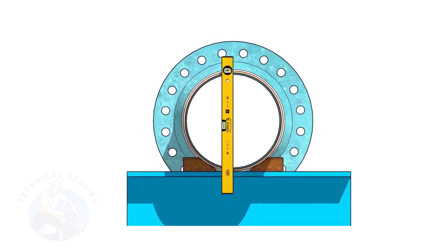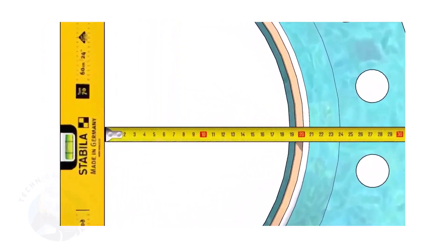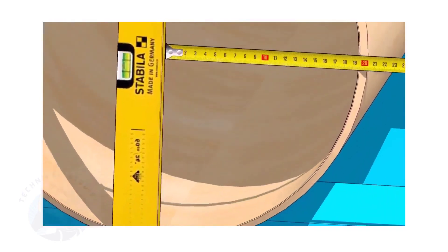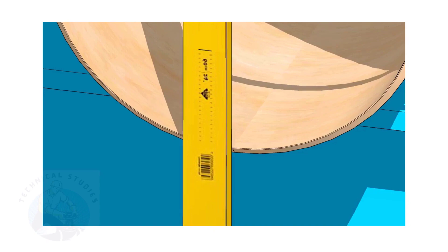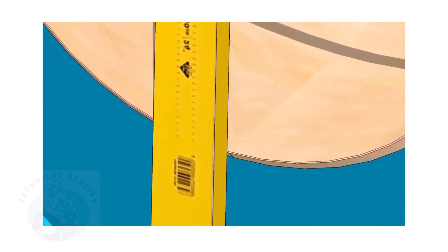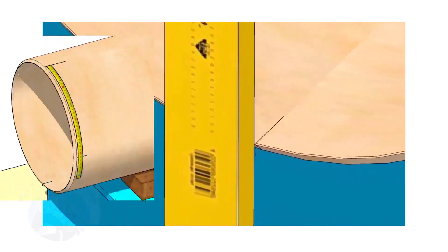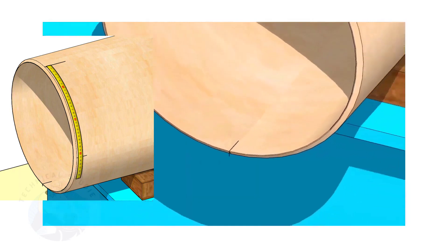Hold the spirit level vertically and transfer the top center mark to the bottom side, as shown. Mark the quarter circumference on both sides of the pipe.